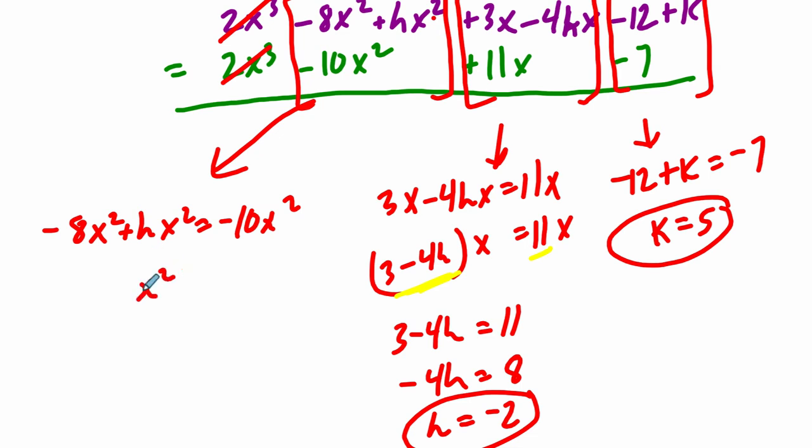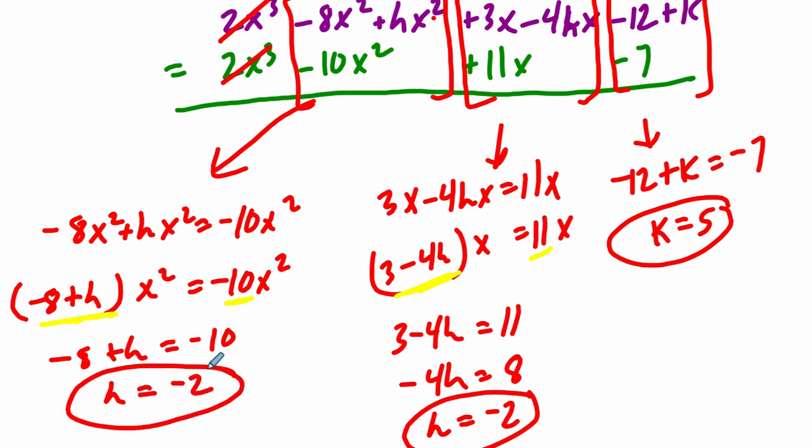Again, factor out the x squared on the left-hand side, and what's left is negative 8 plus h. So, in order for negative 8 plus h times x squared to be equal to negative 10 times x squared, what has to be true? Well, negative 10 has to equal negative 8 plus h. They have to be equal to each other. So, negative 8 plus h has to equal negative 10. We add 8 to both sides, and we still get negative 2, and we've solved it.